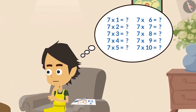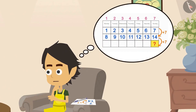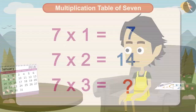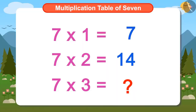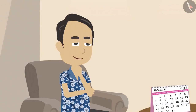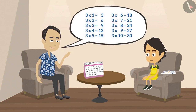Ayushman explained that the first Sunday is 7 multiplied by 1, that is 7th. The second Sunday is 7 multiplied by 2, that is 14th. So the third Sunday's date will be 7 multiplied by 3. But I do not know the multiplication table of 7, so without paper and pen, I cannot answer this question. Papa understood Ayushman's problem and asked him if he knows the multiplication table of 3. Ayushman tells Papa that he knows the multiplication table of 3. Then you can easily find what 7 multiplied by 3 is.